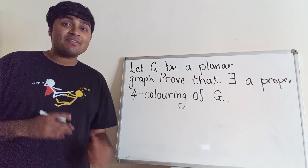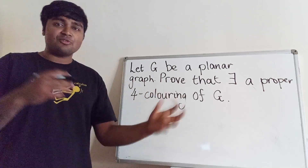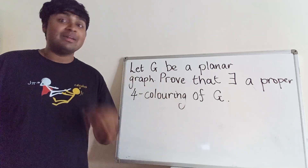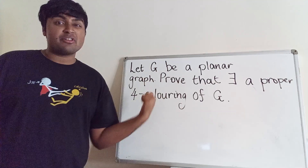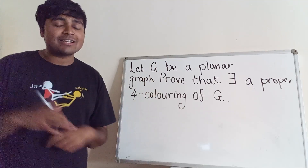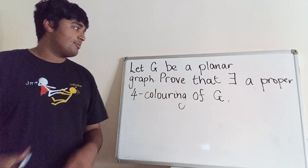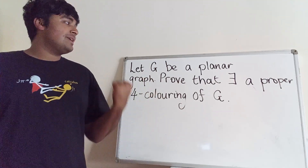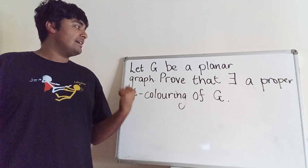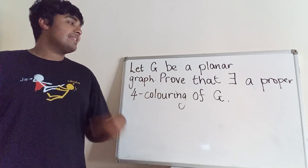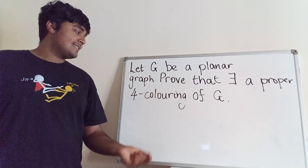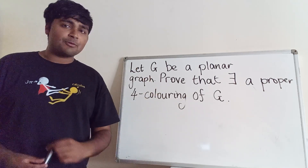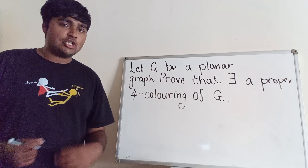Hi, thanks for joining me today. I've got a really cool proof of the four-colour map theorem. Let me state what the theorem is and then we'll get stuck into the proof. The theorem says: if we have a planar graph G, then there exists a proper four-colouring of G.